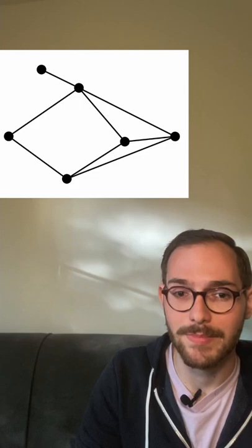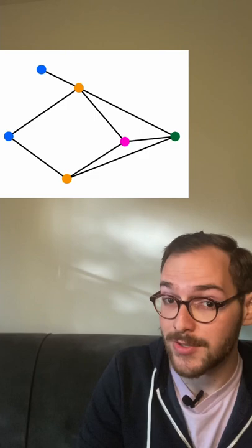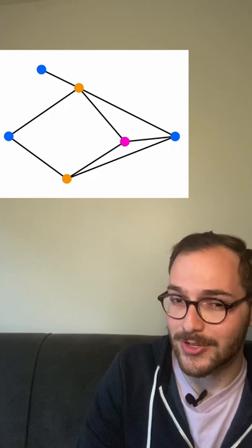In combinatorics, a graph is a collection of vertices and connections between them called edges. A proper coloring is a way of assigning colors to the vertices so that any two which share an edge are different colors.